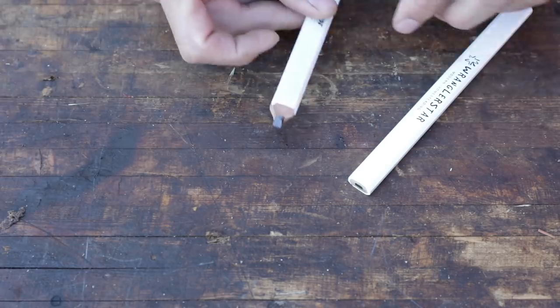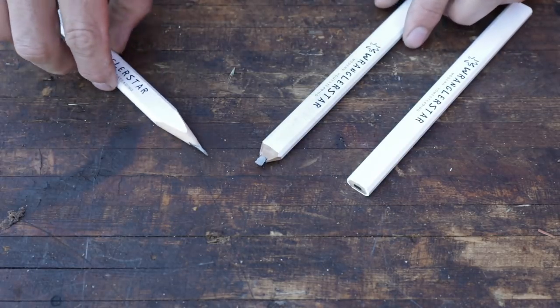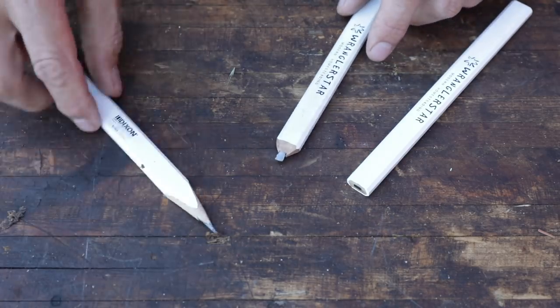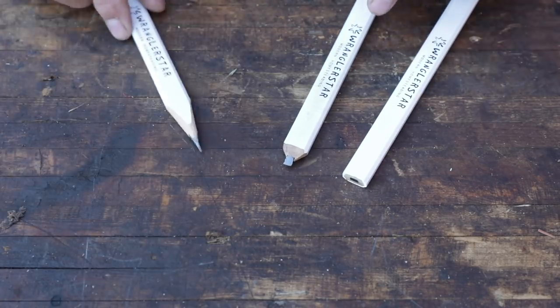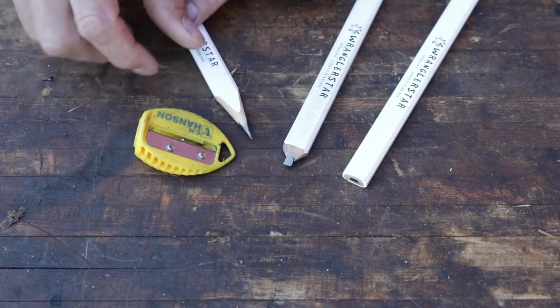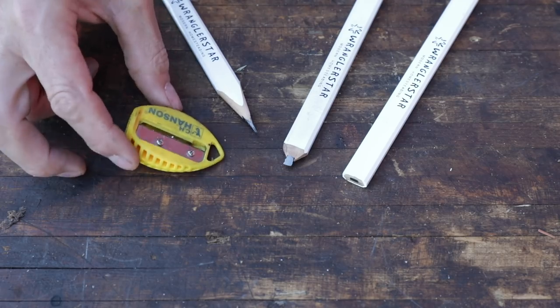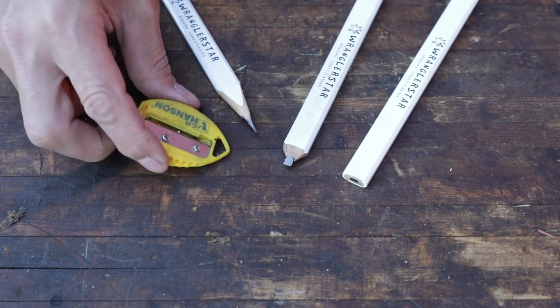And the thing that's kind of interesting, I think that most people don't know, and I didn't never learn this growing up in the trades until actually recently, when you sharpen a carpenter's pencil, a lot of guys use these little handy dandy Hanson guys. Some clever guy invented a pencil sharpener to sharpen carpenter's pencils. And I actually have really enjoyed these. I enjoy them so much that I keep one in my tool belt.